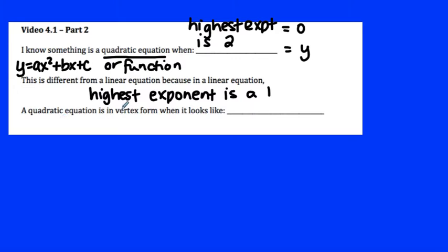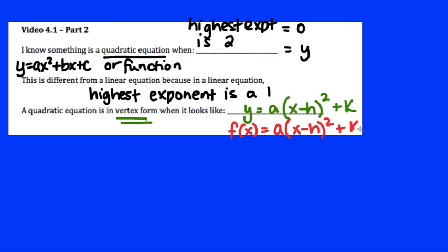A quadratic equation is in vertex form when it looks like y equals a times x minus h squared plus k. That's vertex form. Now remember, I don't have to just write it as y, I could also write it as f of x equals a times x minus h squared plus k.